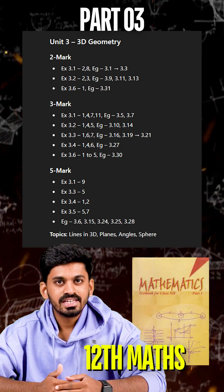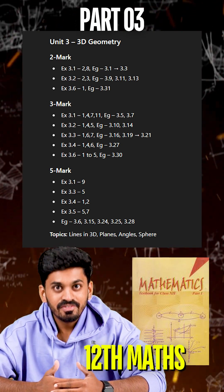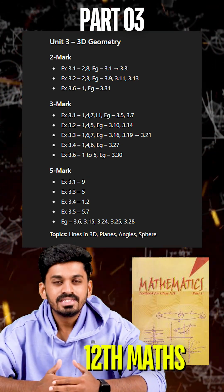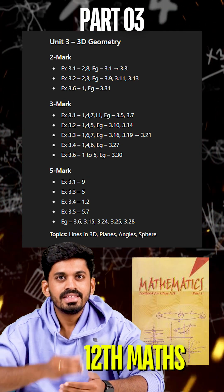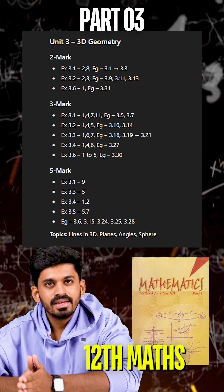5 marks in netiquenai: XI is 3.1 law 9. XI is 3.3 law 5. XI is 3.4 law, 1, 2. XI is 3.5 law, 5, 7.